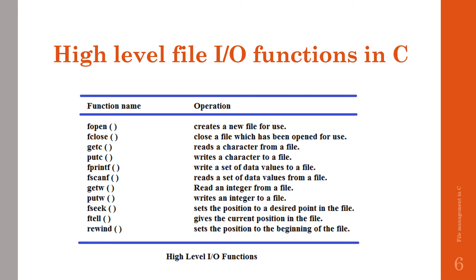The high-level IO functions in C include: fopen — it creates a new file for use or opens an existing file. fclose — closes a file which has been opened for use. fgetc — reads a character from a file. fputc — writes a character to a file.